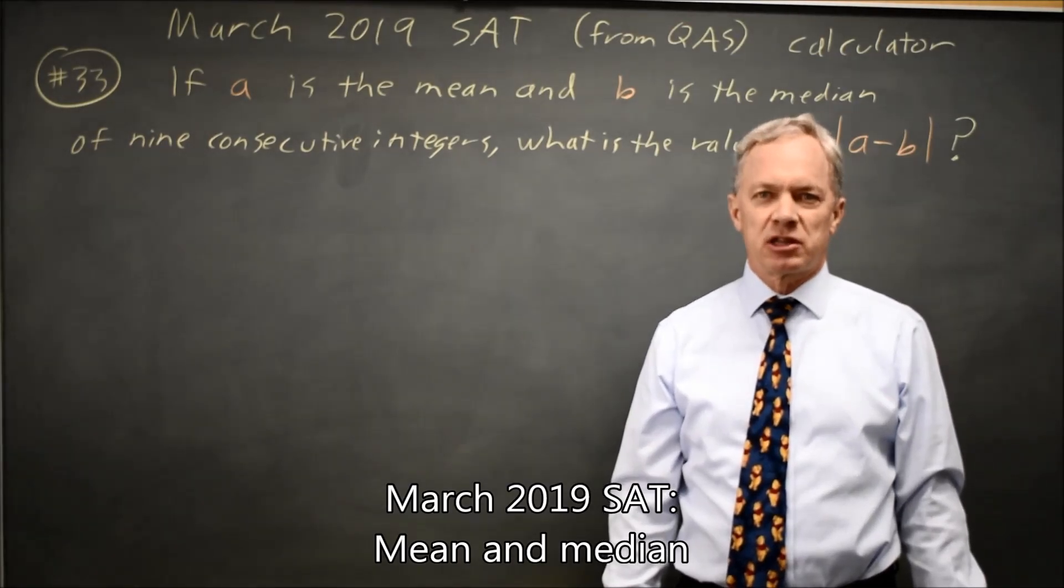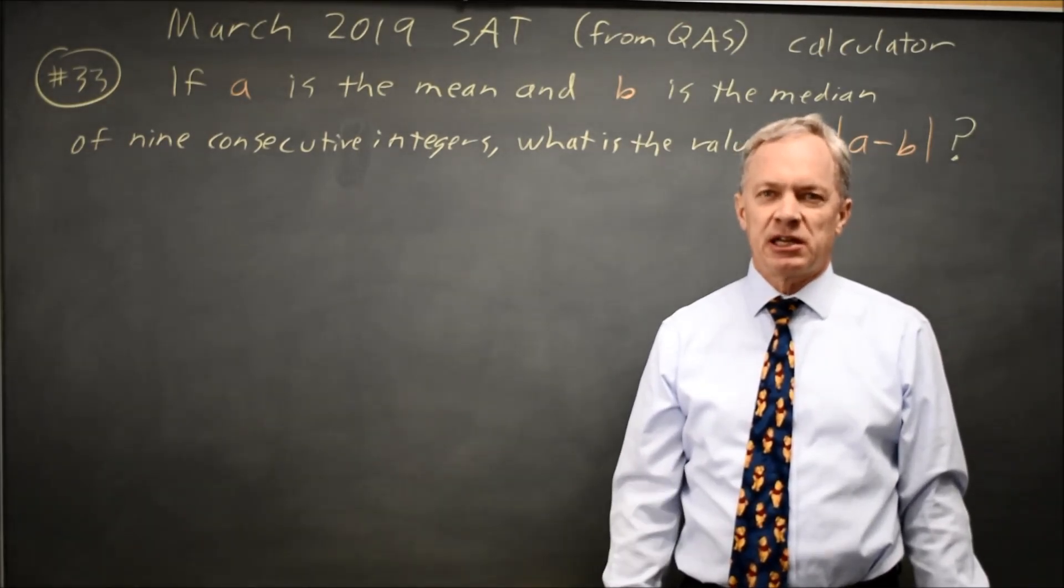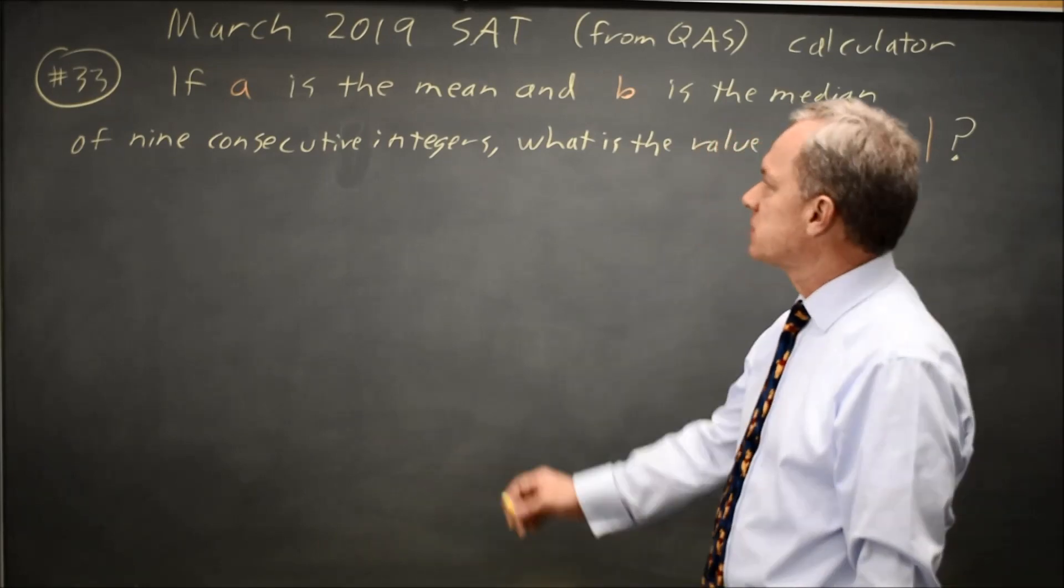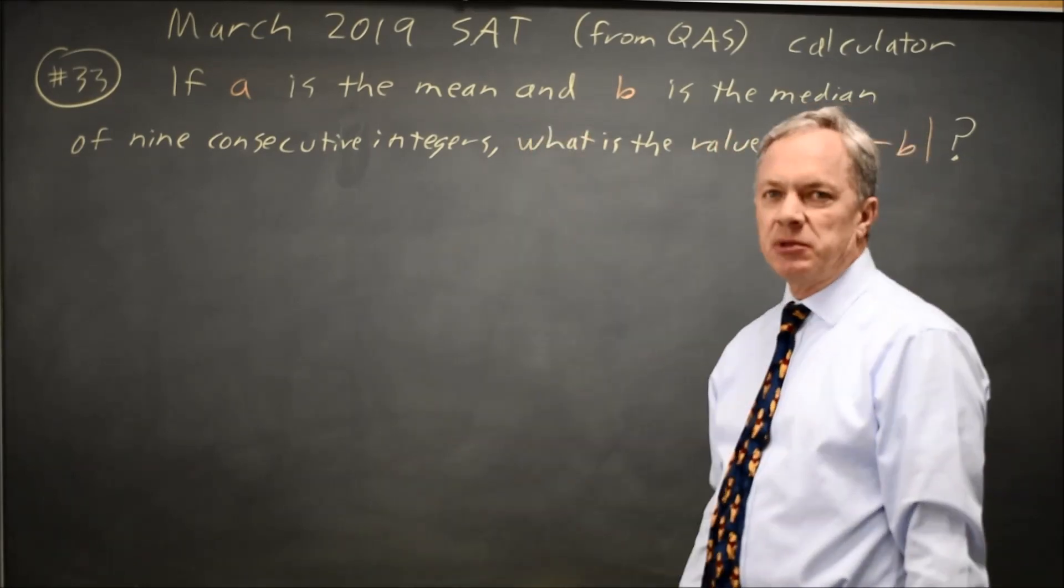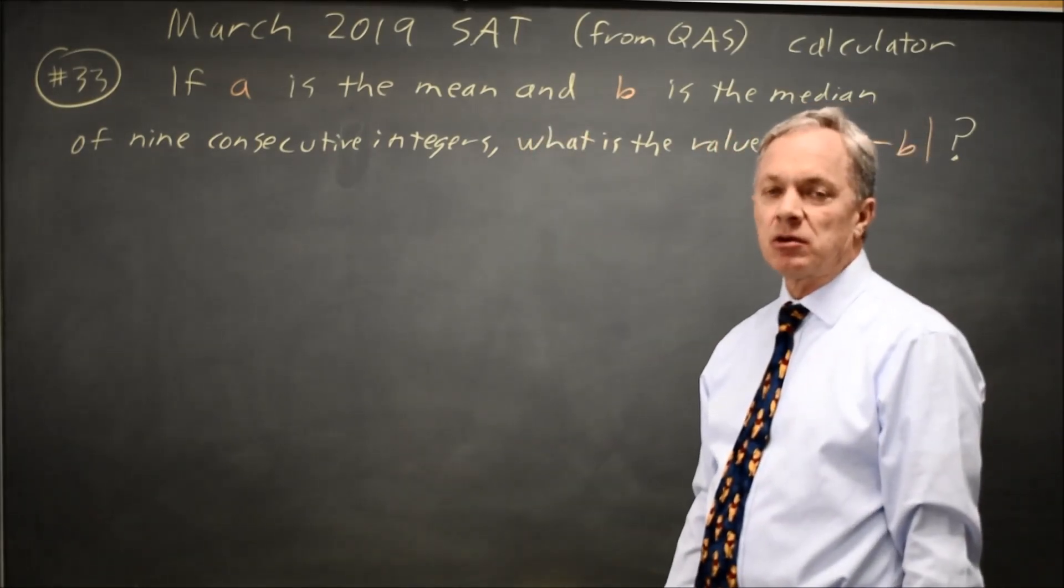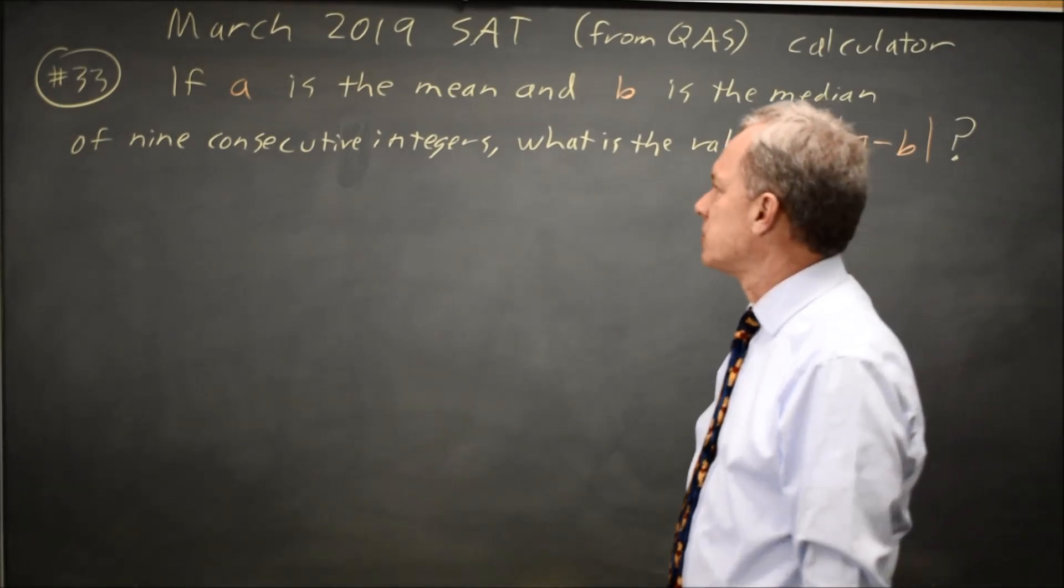This is calculator question number 33 from the March 2019 SAT. The College Board is asking us if A is the mean and B is the median of nine consecutive integers, what is the absolute value of the difference?